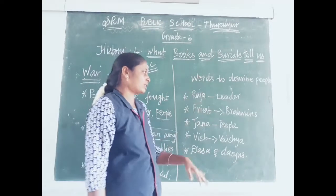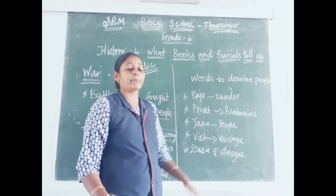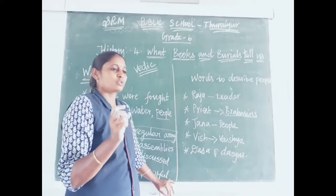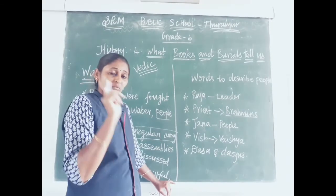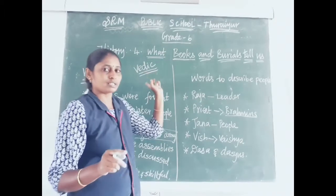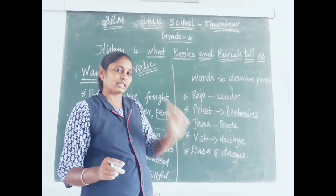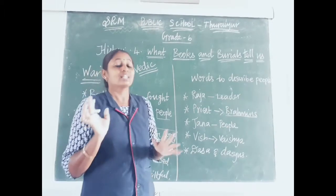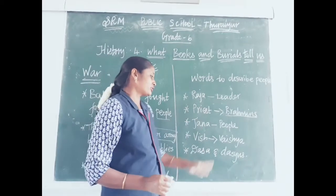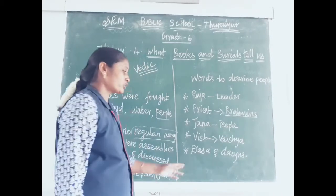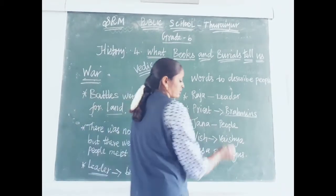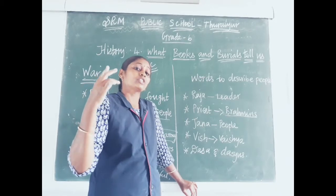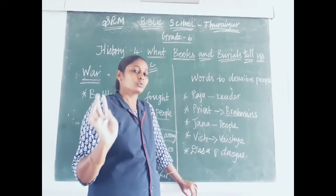After the Raja, the next important person was the priest. Priests mostly belonged to the Brahmin community. Brahmins alone were allowed to study the Vedas. There was a caste difference even then. People were divided into four categories: one is Brahmanas, second is Kshatriyas, third is Vaishyas, and fourth is Shudras.